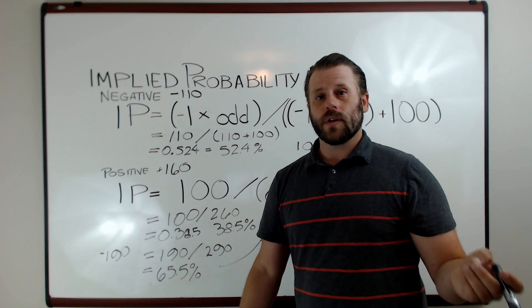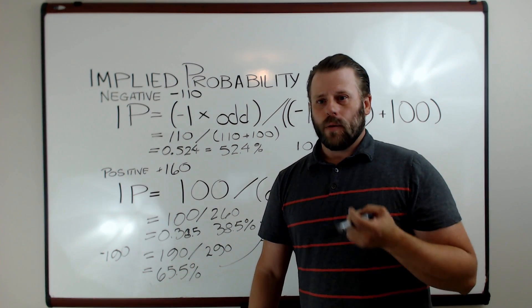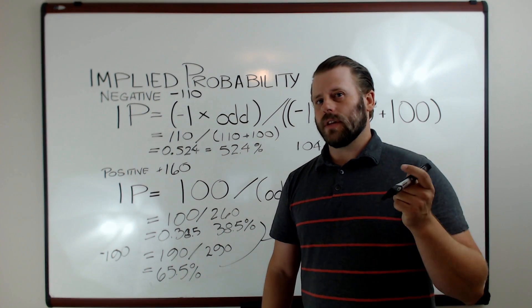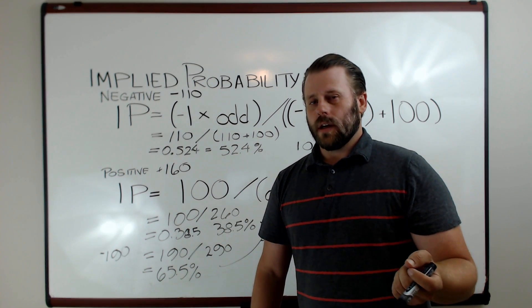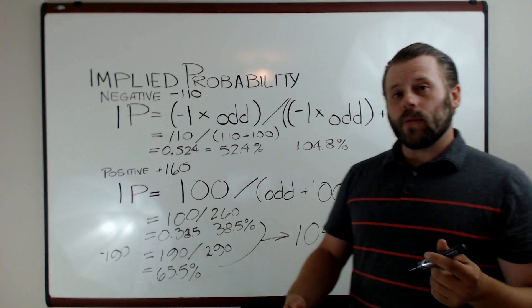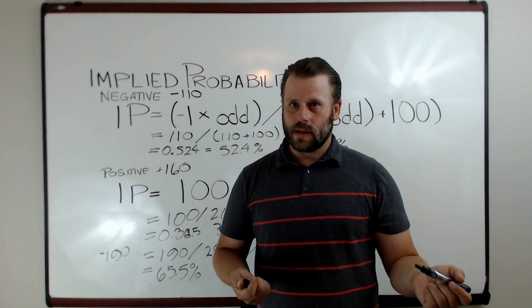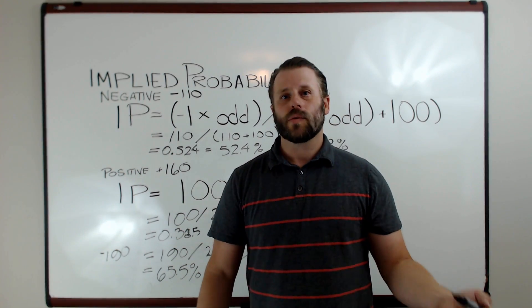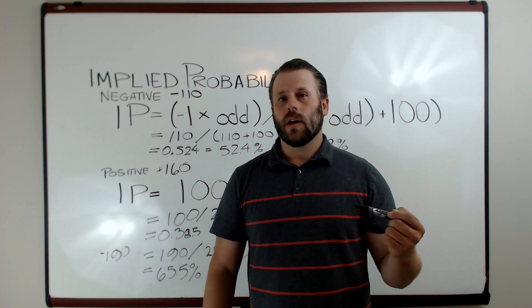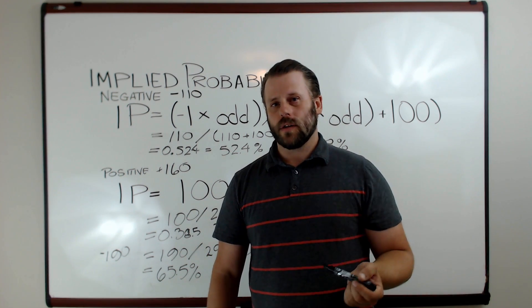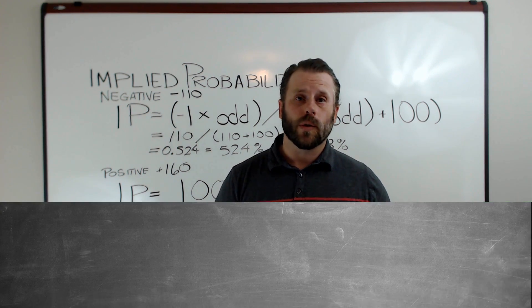You always want to try to look for bets when you're handicapping that have the lower of the implied probability numbers, because that's where you stand to make the most profit. That's where you stand to break even at a much lower rate than the 52.4%.